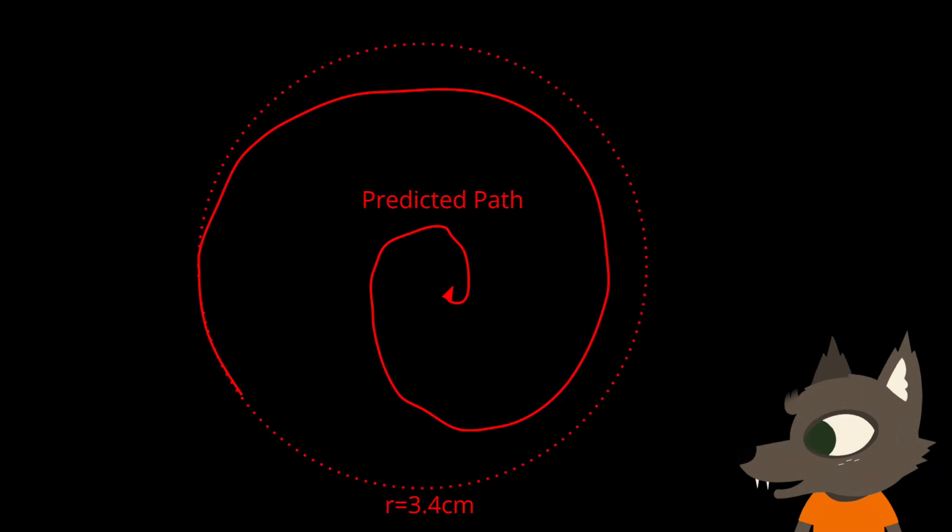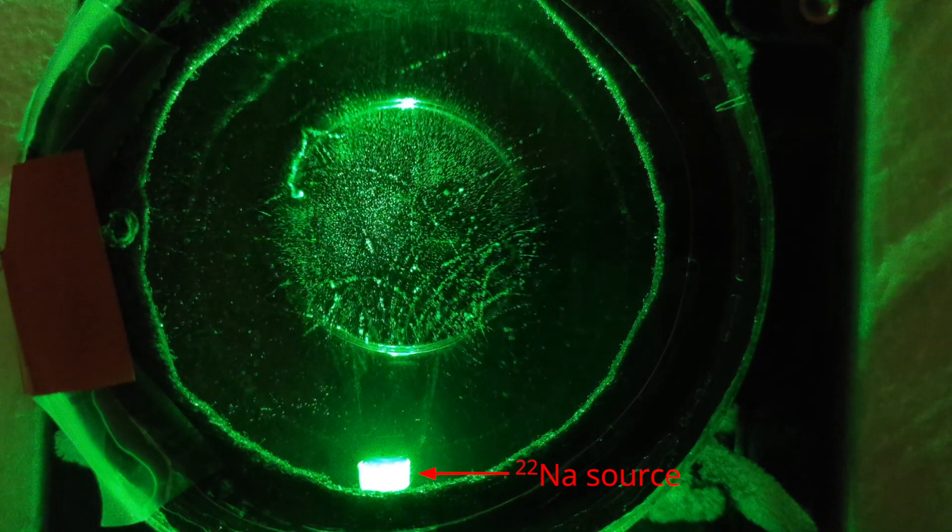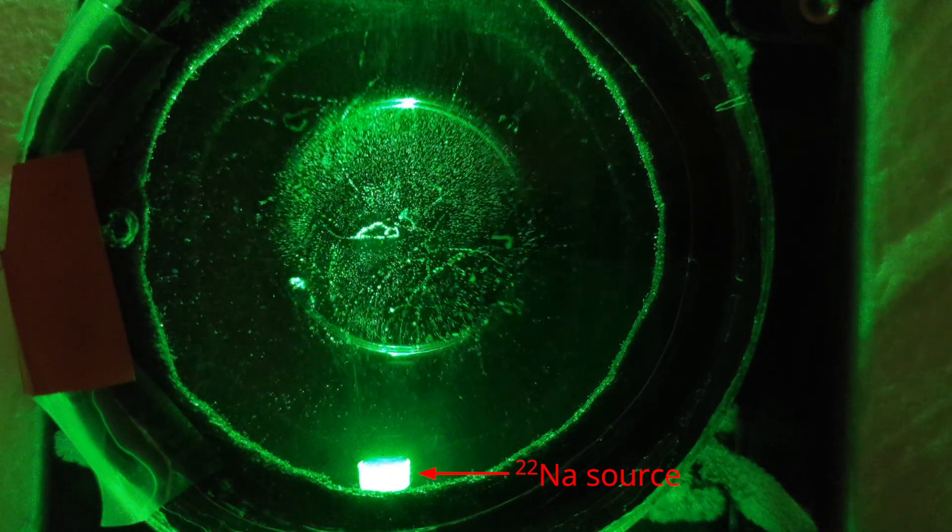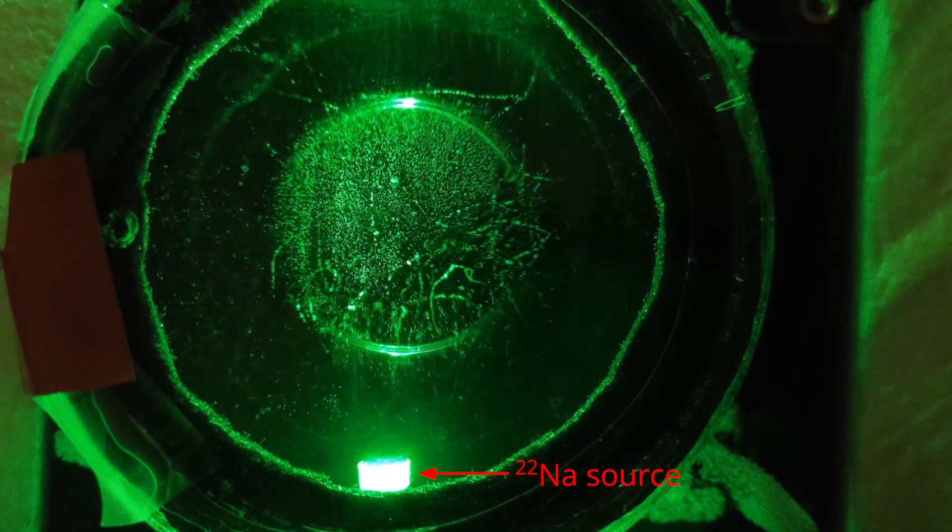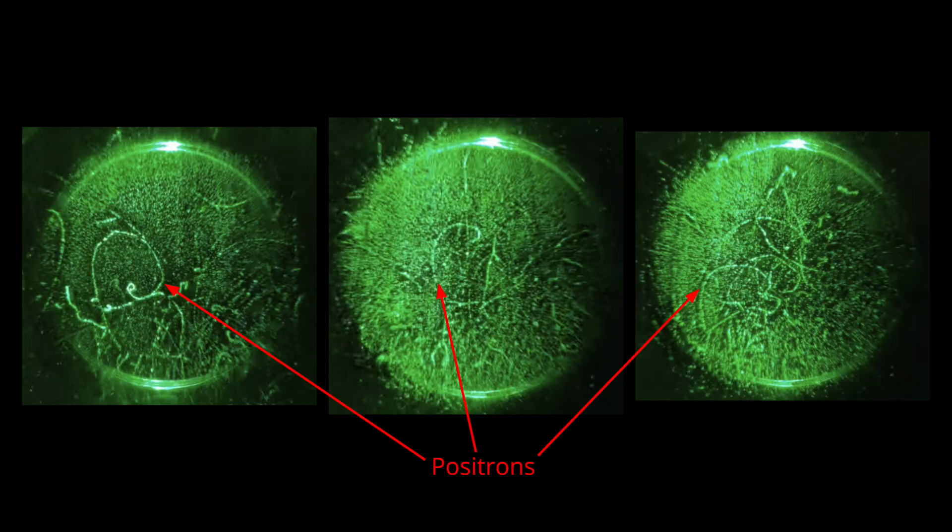The particle trails should also spiral inward, as they slow down and create tighter curves. When I put the sodium-22 source in the cloud chamber, I can see lots of different particle trails. Some of these trails are definitely clockwise inward spirals, which means I can confidently say that they're positrons.